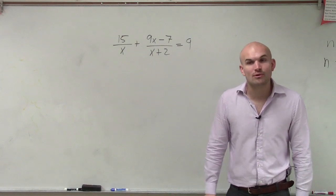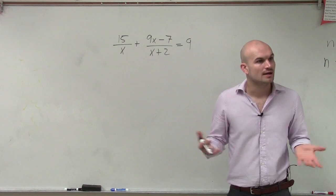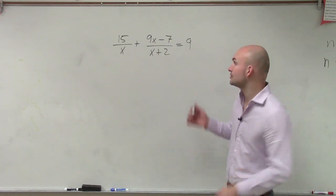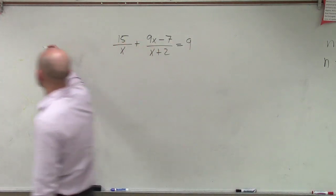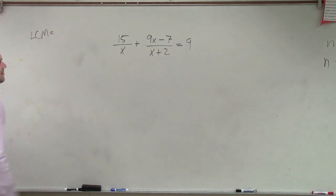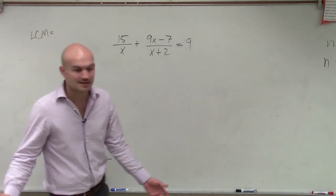Let's get rid of the fractions. So what we need to do is multiply every single term by our LCM. So the first thing I want to do is determine what is going to be my LCM, my least common multiple, for my denominator, or you could call it your LCD, your least common denominator.